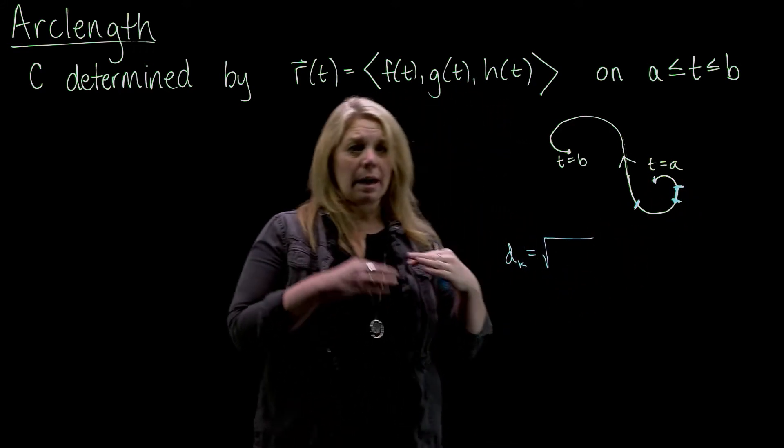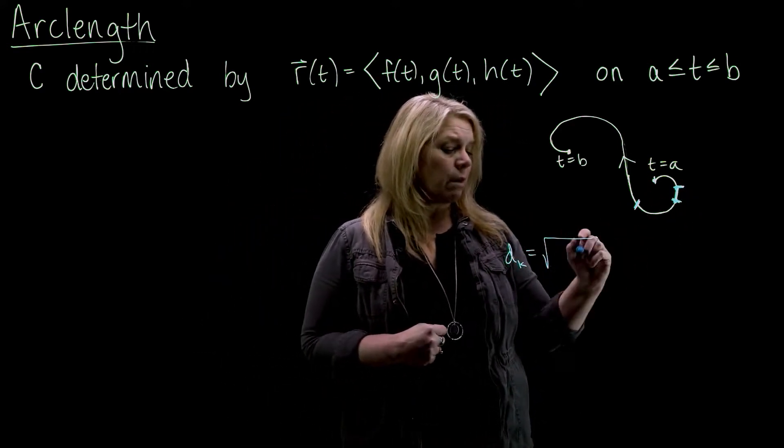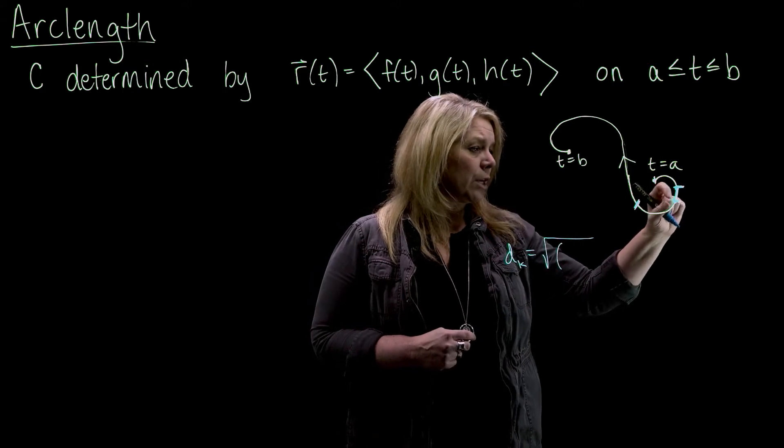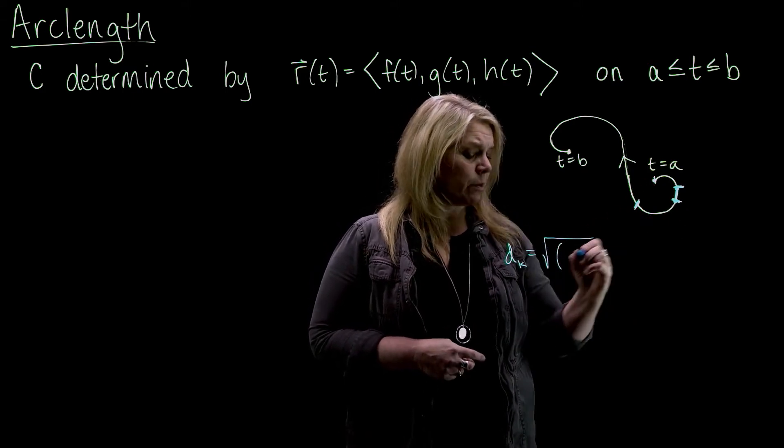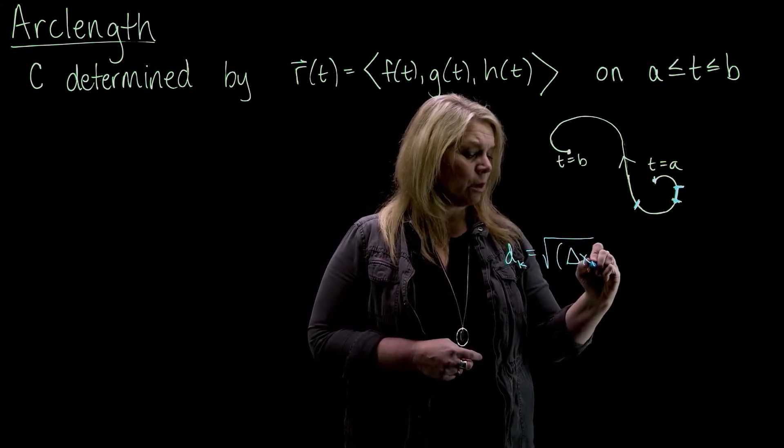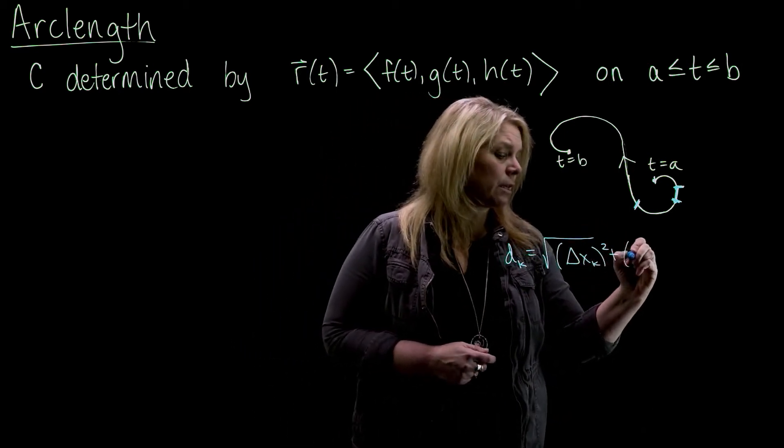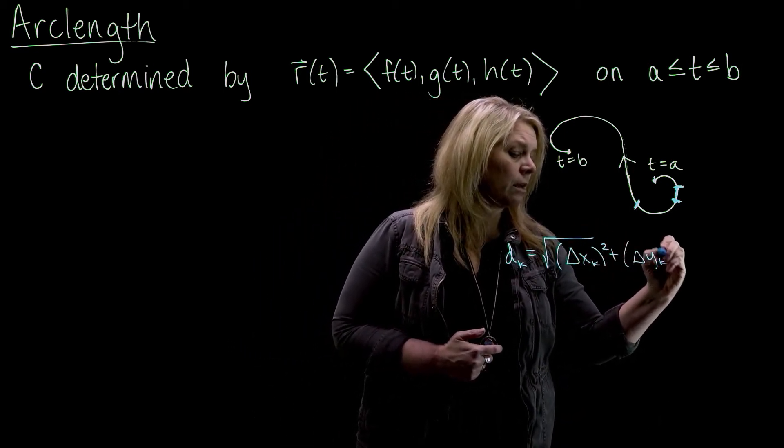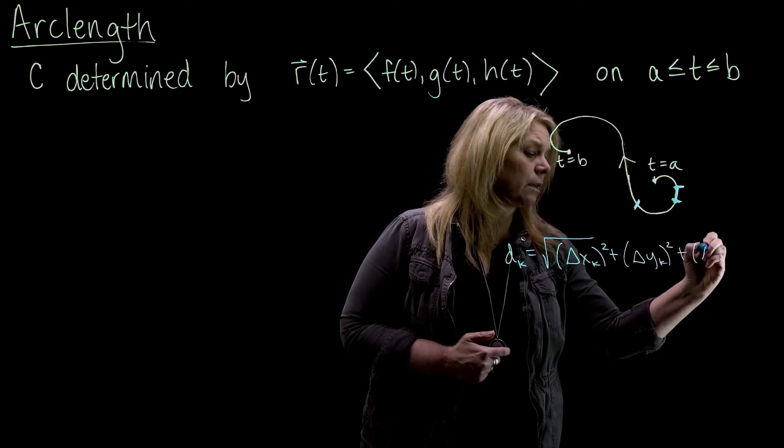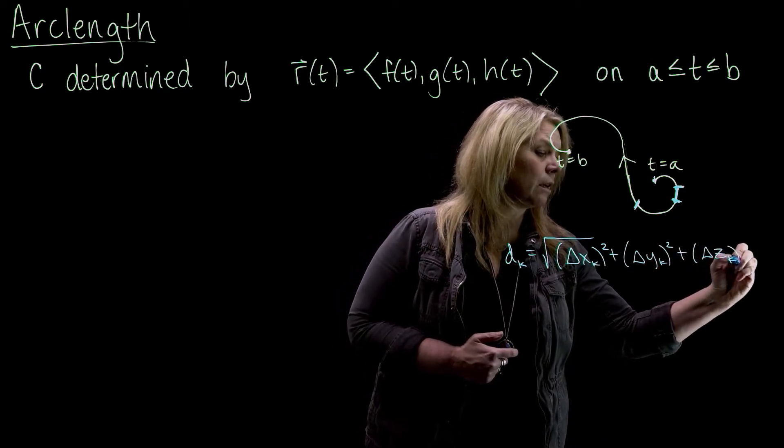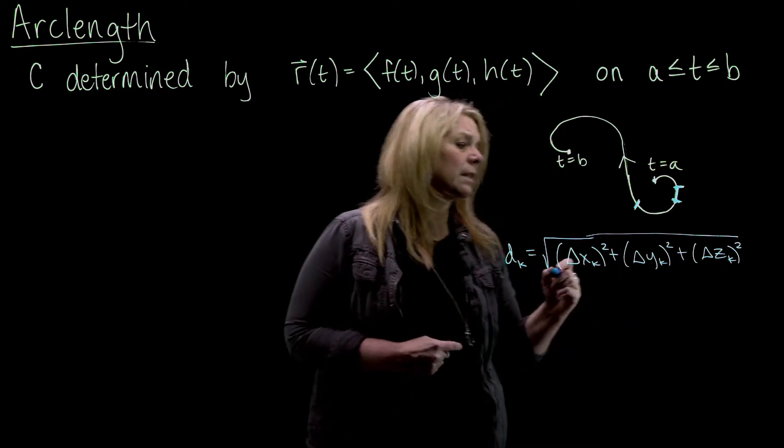I'm going to basically use a little distance formula to calculate the length of an individual little piece here. Distance formula in three dimensions, I've got square root of the change in x, the difference between the x coordinates of those two points squared, plus the change in y squared, plus the change in z squared. That's just distance formula.